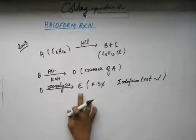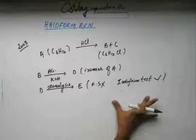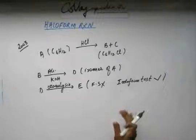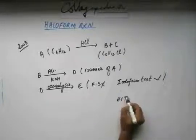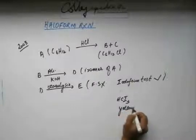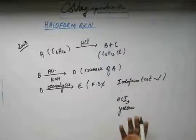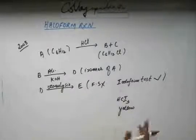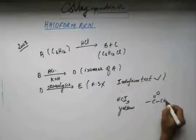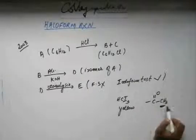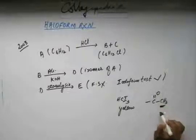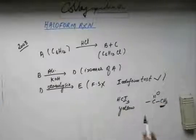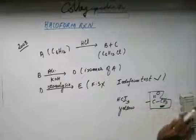So this compound E gives iodoform test. Iodoform test is simply iodoform reaction - compounds giving or having iodoform reaction give iodoform test. Iodoform test means when iodoform CHI3 is formed, this is yellow in color. So when it is yellow in color we can know that the reaction has occurred, and this particular reaction is used to test whether the compound has this group - a methyl attached directly to C=O. So this is a test for this kind of group. Iodoform test is positive meaning E must be having this kind of group.